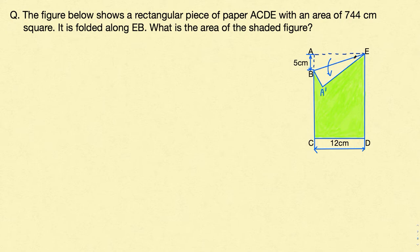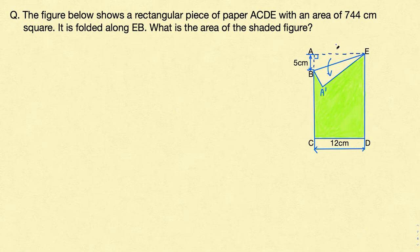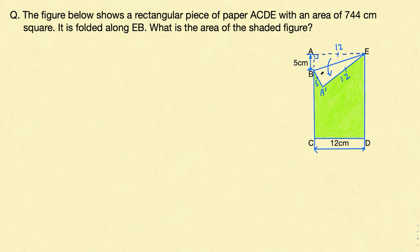The area of triangle ABE and the area of triangle BEA dash are the same, because it's the same piece of paper being folded. For triangle ABE, the base is 5 cm and the height is 12 cm, since the angle is 90 degrees. The opposite sides of the rectangle are equal, so if one side is 12 then the other is also 12. AB equals BA dash, and AE equals A dash E.